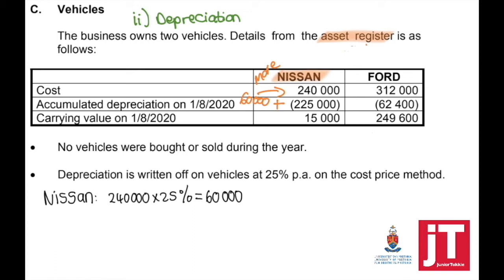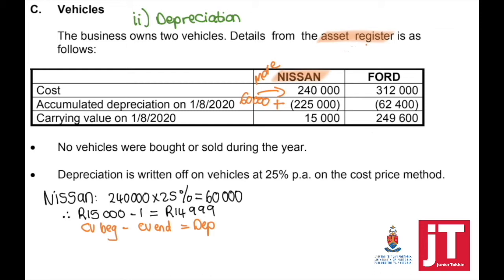When you see that the carrying value is this low, make sure you understand that we cannot have a negative amount and we cannot have zero. So then our carrying value at the end should be one. We take the carrying value at the beginning minus the carrying value at the end, and that equals your depreciation for this year. Please remember, this is one asset, so the carrying value should be one. If I had five of the same vehicles, I would say the carrying value at the end should be five, and I would subtract five from the carrying value in the beginning. We always need to multiply by the number of assets.